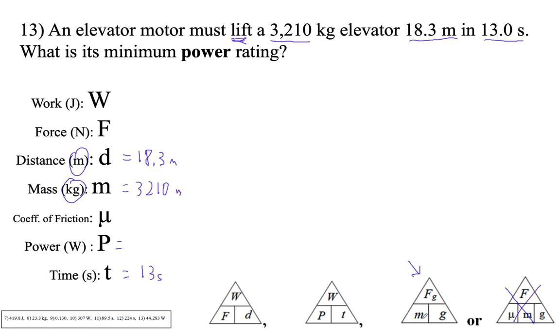So force of gravity is mg. Let's see that. We're lifting, and if we're lifting, that's the force we have to exert. Assuming we're not accelerating. Okay, so let's see. So that's going to be mg. So that's going to be 3,210 kilograms times 9.8. And that is 31,458 newtons.